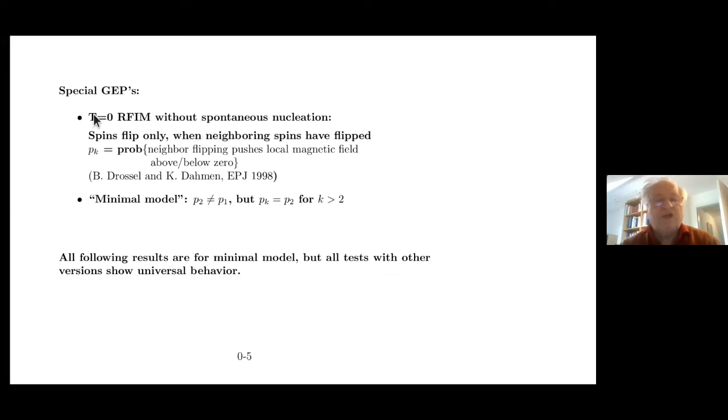Let me just mention two special cases for general epidemic processes. The random field Ising model at T equal zero, where you neglect spontaneous nucleation, so spin flips only when it's pushed by the neighbors. There you can define PK just in this way. Dawson and Diamond showed this in a very clear paper. But I mostly use another model, namely where P1 and P2 are different, but all the other PKs are equal to P2. So in this minimal model, I just have to remember whether a site was attacked before or not. I don't have to remember how often it was.